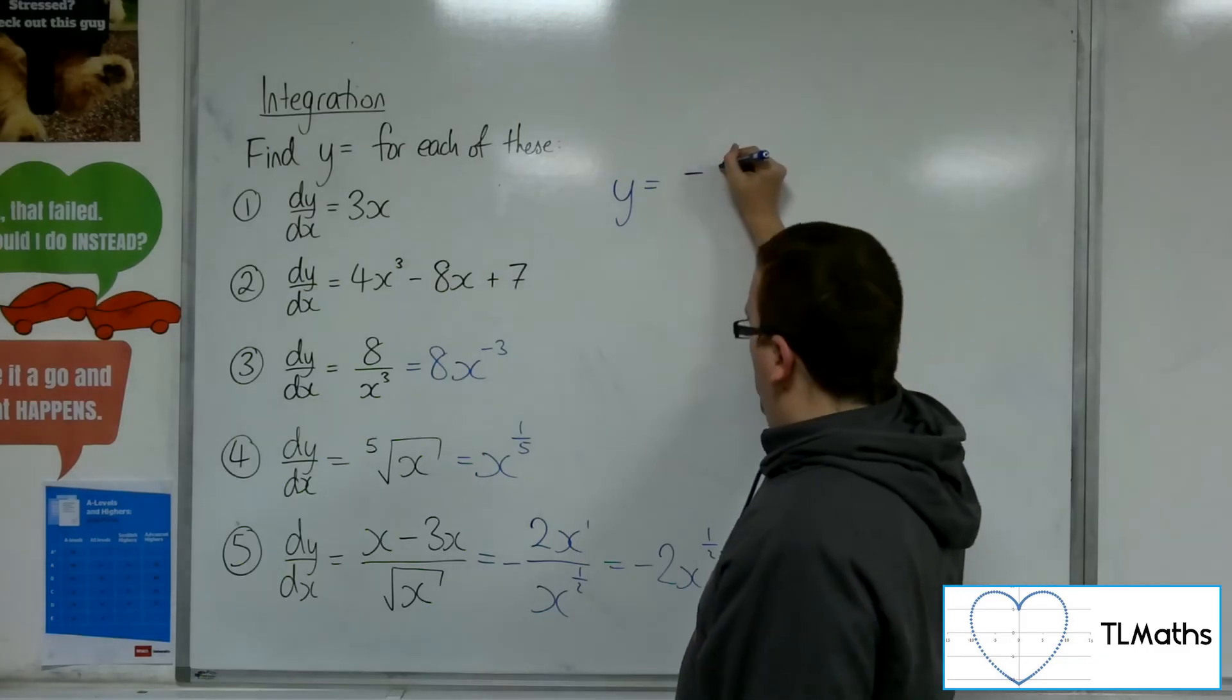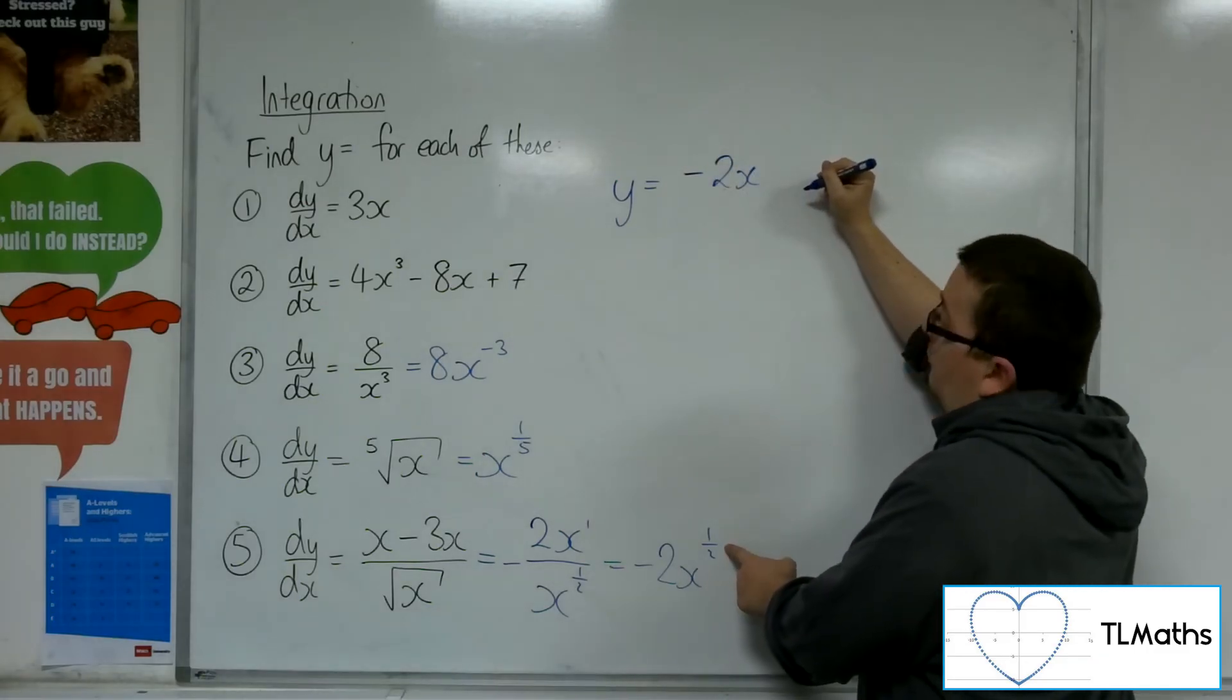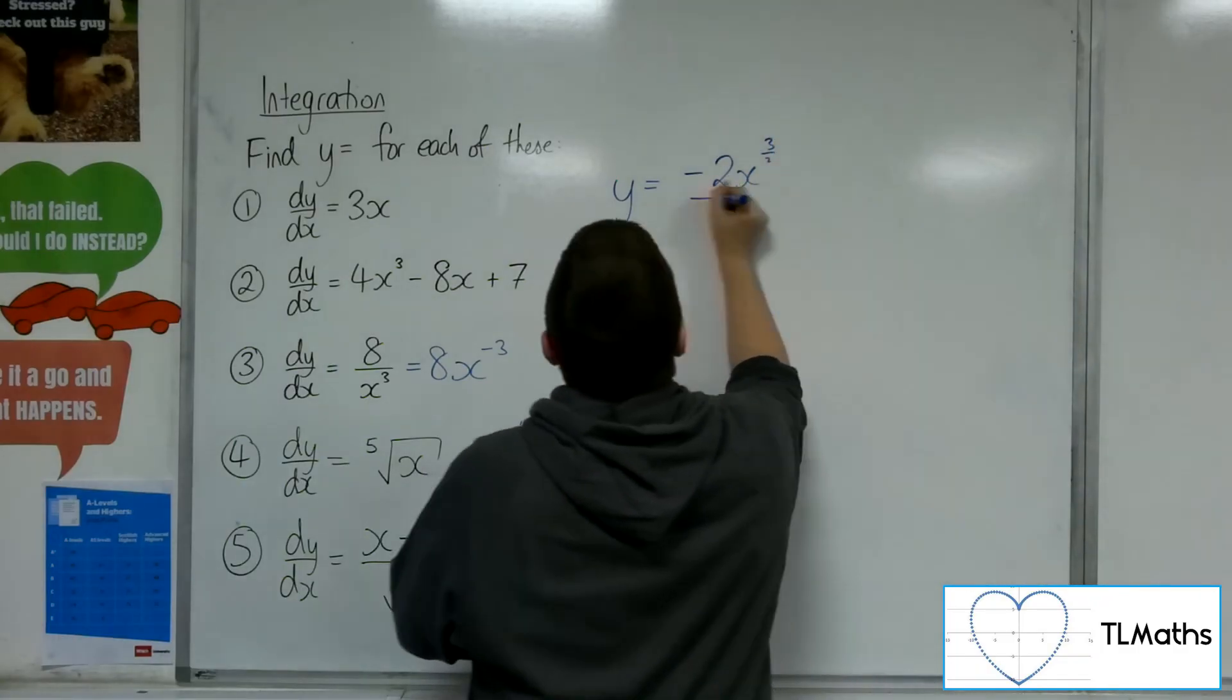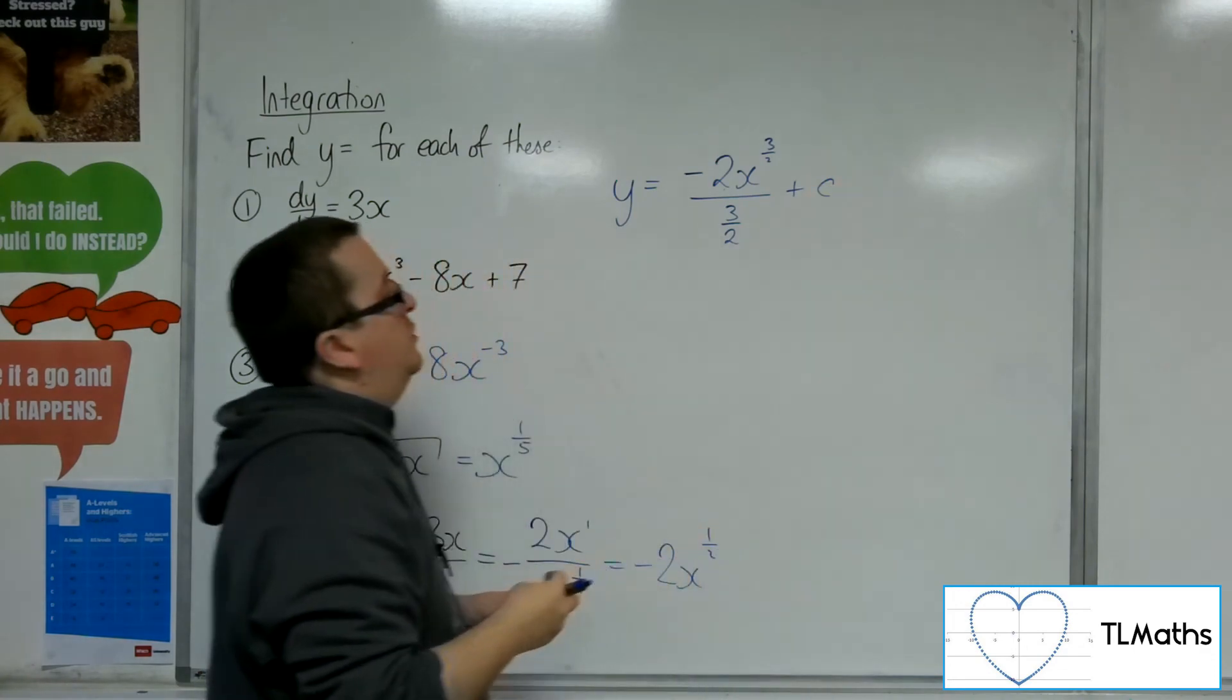So what I'm going to do is I'm going to add 1 to the power. Sorry, 1 half plus 1 is 3 halves. And I'm going to divide by the new power, plus that constant of integration.